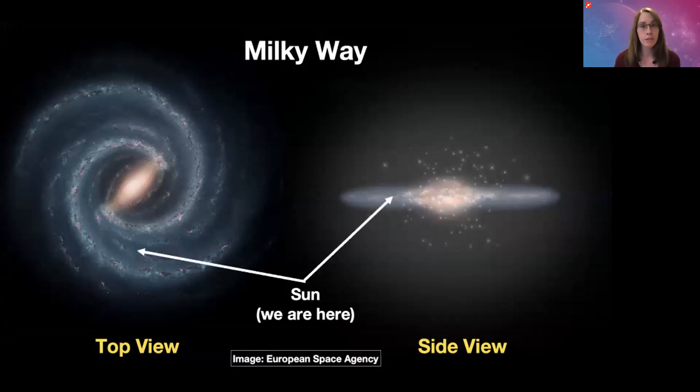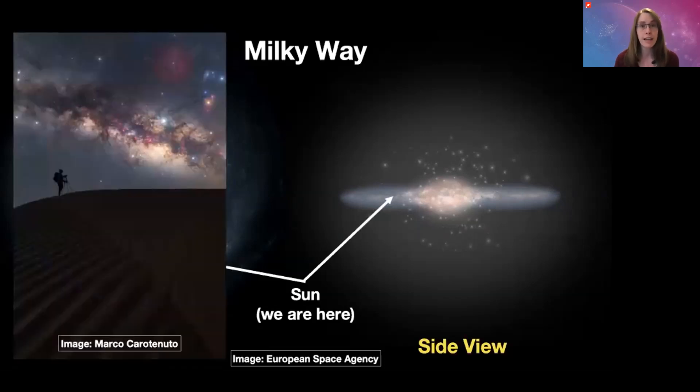Our sun is one of those stars, and when we're looking up at the sky from Earth, we're actually looking through the plane of the spiral disk. So we're seeing lots of bright spots and also lots of dark, dusty streaks.